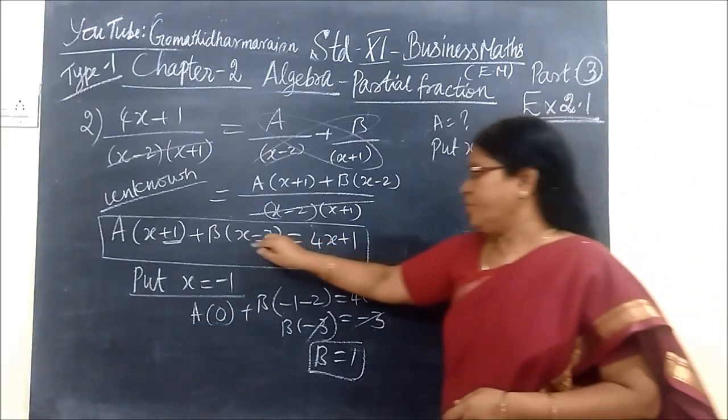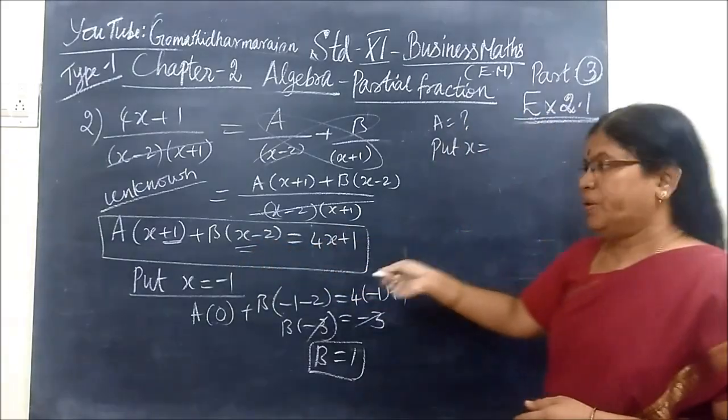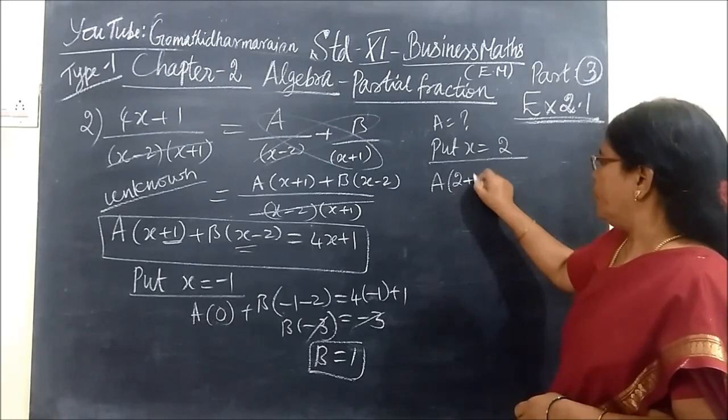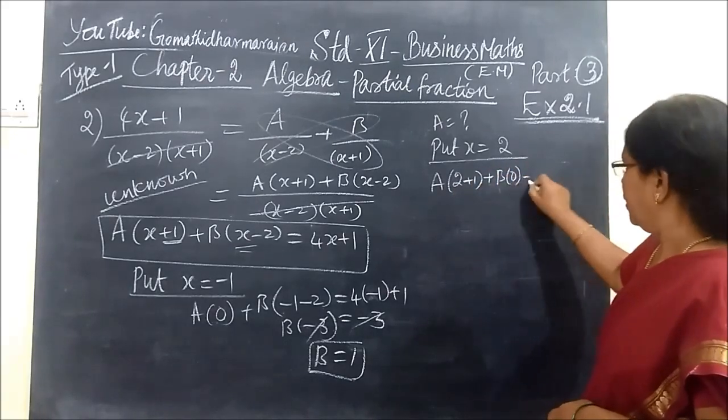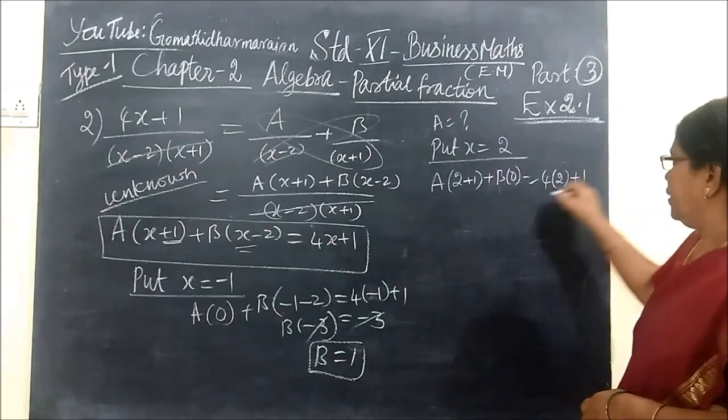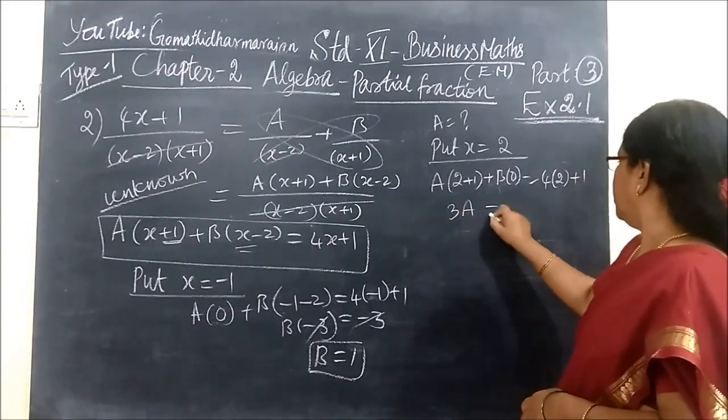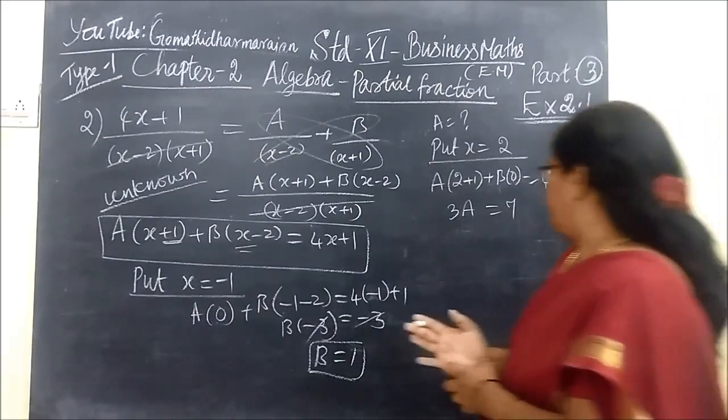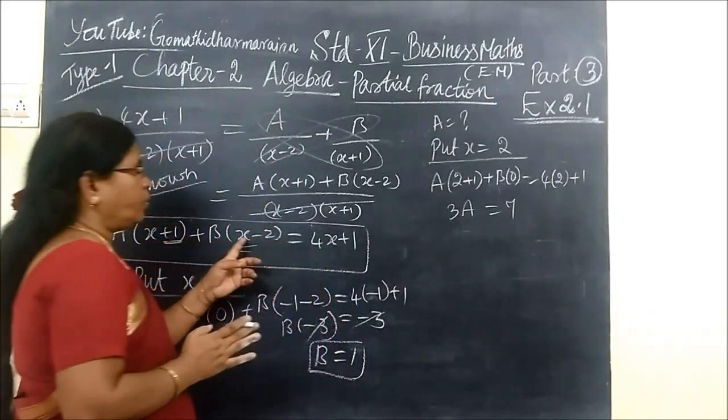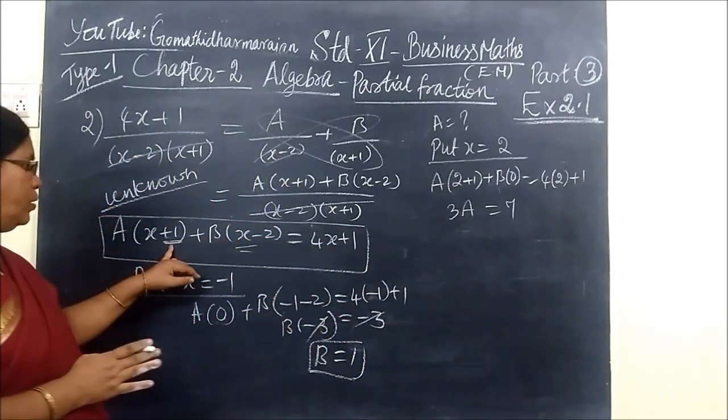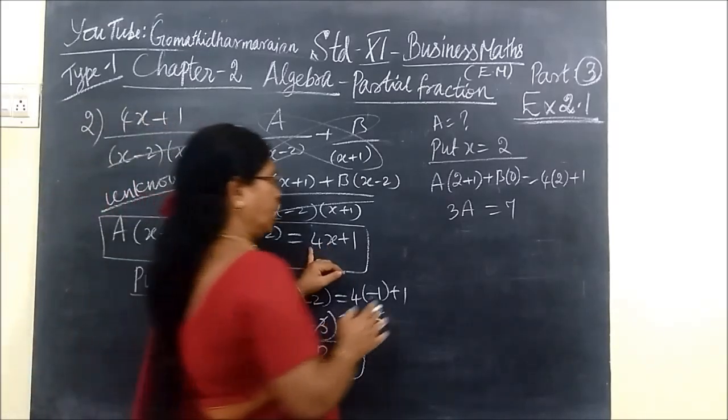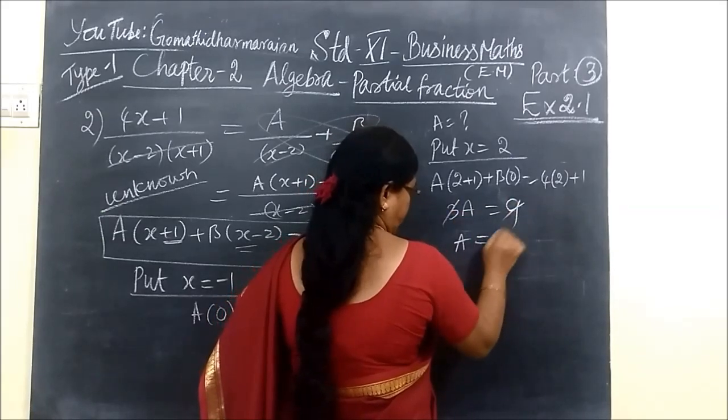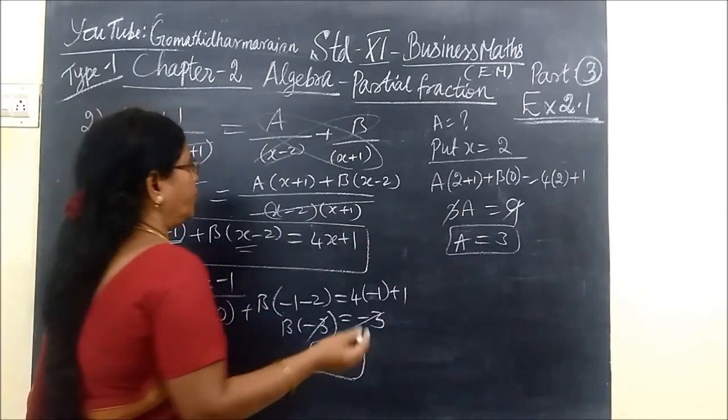Next you want to find A. Put x equal to 2. A bracket 2 plus 1 and B is zero. Wherever x comes you are writing 2, so 3A equal to 4 times 2 is 8, 8 plus 1 is 9. Therefore A equal to 3.